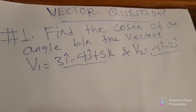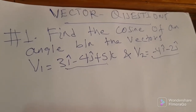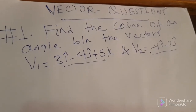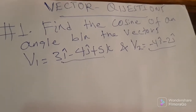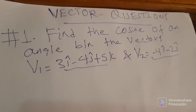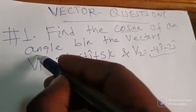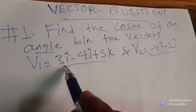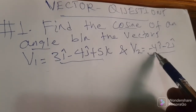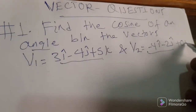Hello everyone. I am going to find the cosine of an angle between vectors. V1 is equal to 3i minus 4j plus 5k. V2 is equal to negative 4i minus 2j plus 0k.